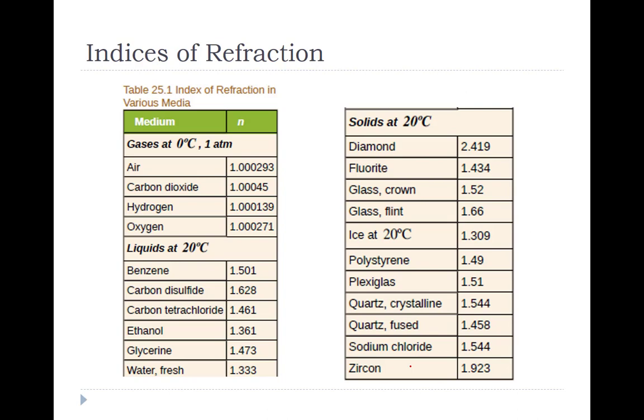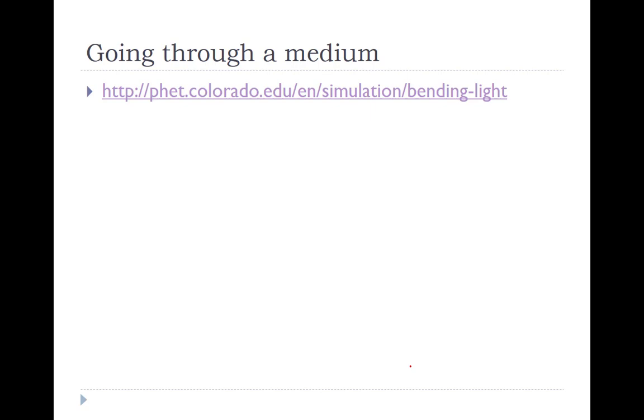This table for indices of refraction is directly out of your textbook. When you work the homework problems, these are the numbers that you are going to need to answer the questions. So next, we're going to look at what happens when we move from medium to medium. And for that, we're going to look at this simulation.